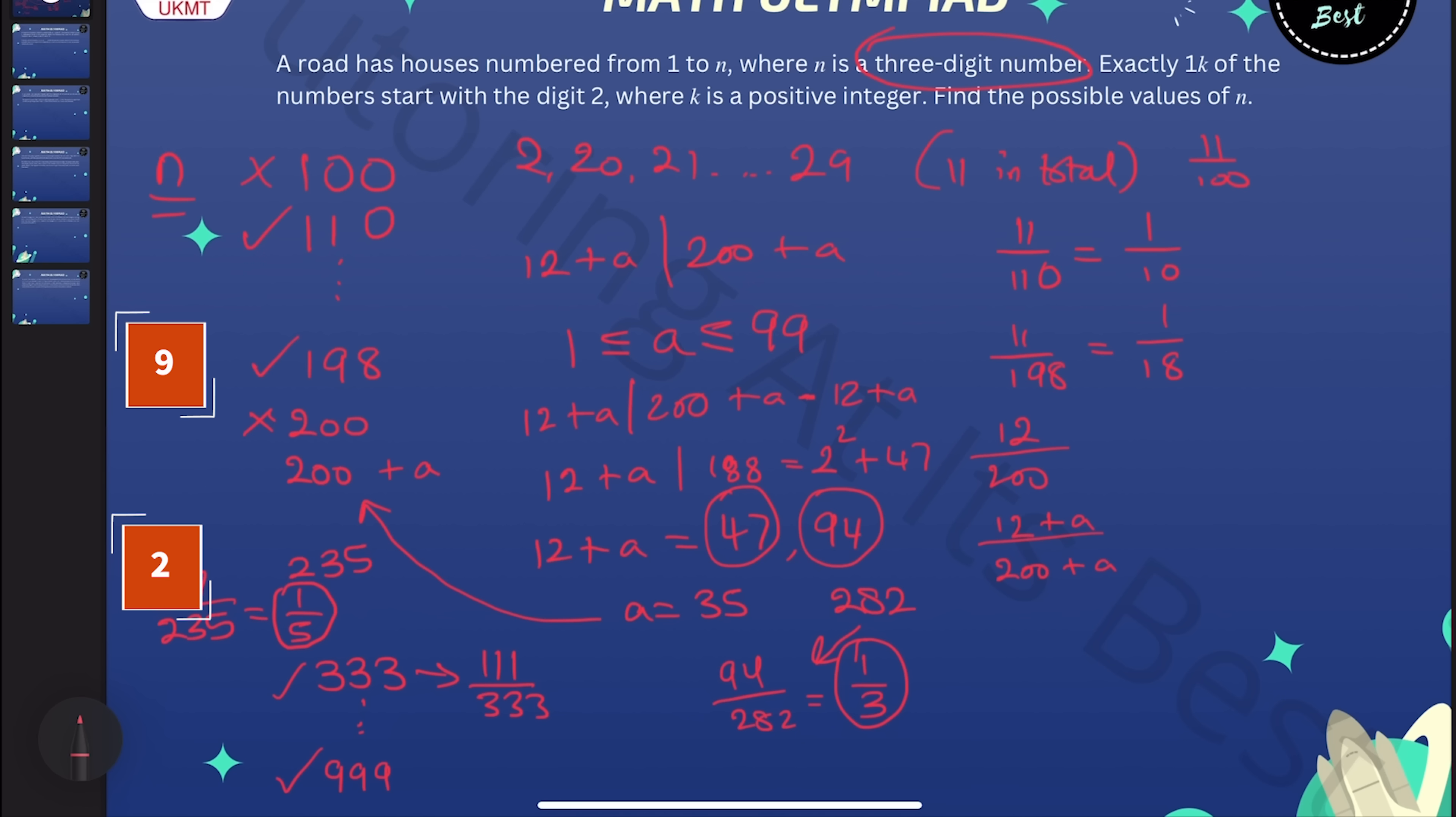So that means we end up with three different sets of n that are possible here. We've got these ones here, which are multiples of 11. We've got two that we found that start with 200. And then we have these ones here, which are multiples of 111. So in total, that gives us 18 possible values. And that's our answer.